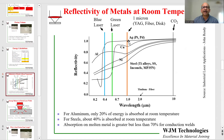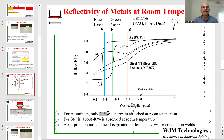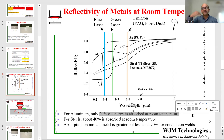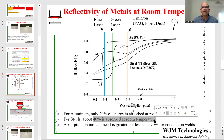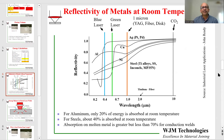Aluminum is about 80% reflective at 1 micron at room temperature, and steel is about 60% reflective. So aluminum is only absorbing 20% of the energy at room temperature — at the start of welding, 80% of the energy deposited into the aluminum surface is being reflected and only 20% is absorbed. Steels are a little better at room temperature, with about 40% absorbed. Even though that seems low compared to 100%, it is still a significant improvement over aluminum.